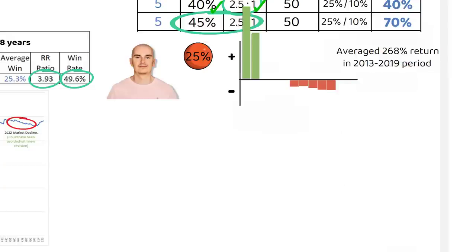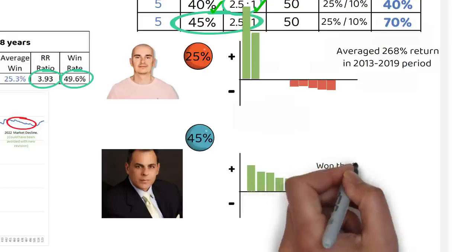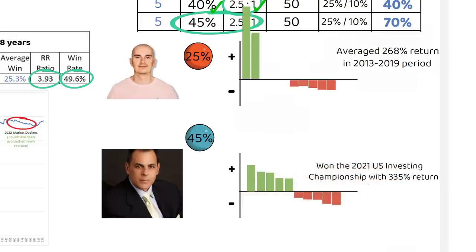On the other hand, another legendary trader, Mark Minovini, who also produces huge returns, works with a better success rate of near 45%, but the average reward to risk is much smaller than Kulamagi's. Both traders have different trading systems, but similar returns through trading.